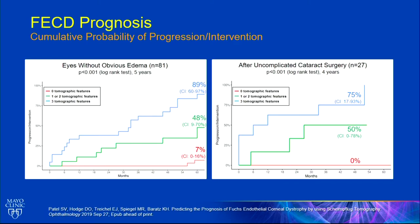This is clinically important because we're often faced with the decision: do we remove the cataract alone, or do we remove the cataract and also perform endothelial keratoplasty? That's often been a subjective judgment call, but now we have objective evidence. If you have three abnormal tomographic features, there's a 90% chance the cornea will progress in the next five years. If you have none of the features, there's only a 7% risk of progression — so it's fair to take the cataract out without endothelial keratoplasty.